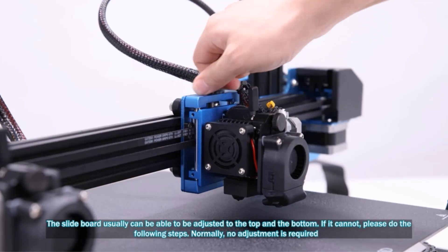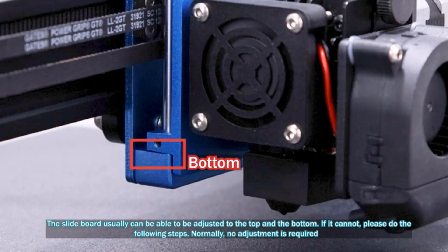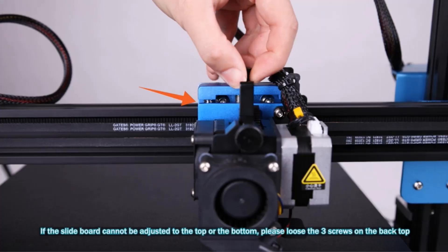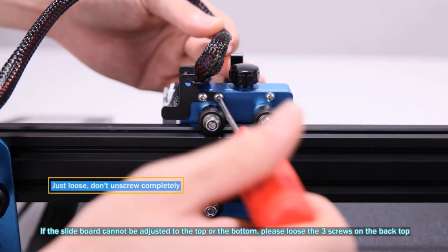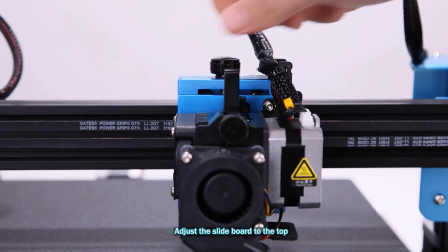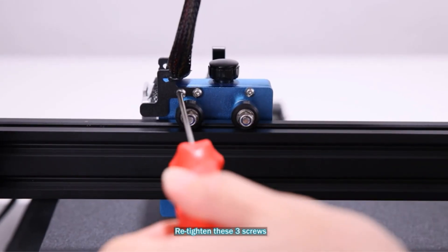The printer offers a larger print volume of 300x300x400mm compared to the SV01-SV02 models, allowing for more creative possibilities. It includes an auto-leveling sensor for optimal bed and nozzle distance, enhancing bed adhesion and print quality.